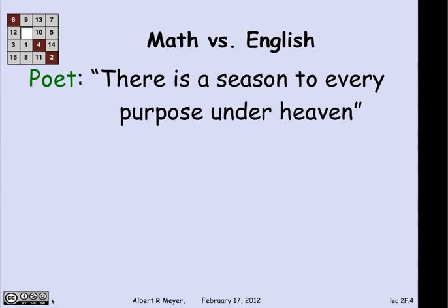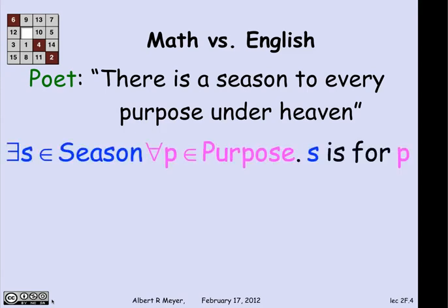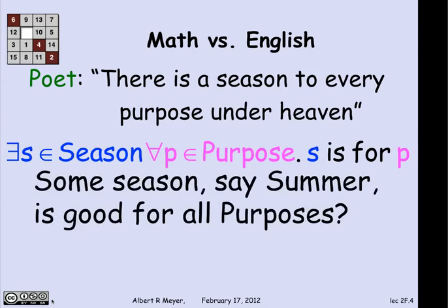Let's look at another example of the same kind. The poet says, "There is a season to every purpose under heaven." This is a variant of a biblical phrase. The literal translation would be: there exists an s that's a season, such that for every p that's a purpose, s is for p. From the way the quantifiers work, that means there's some single season — say summer — that's supposed to be good for all purposes.